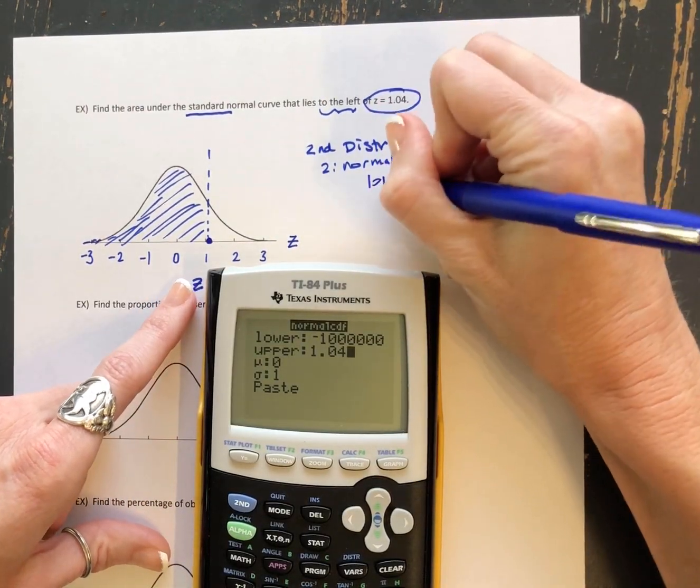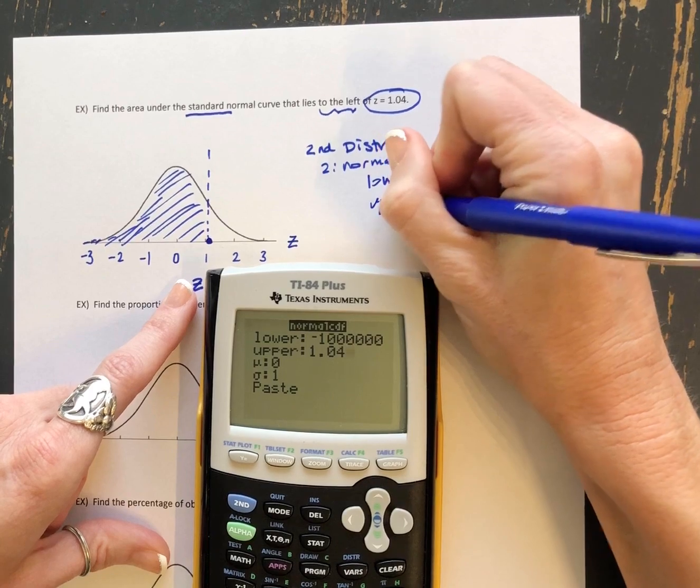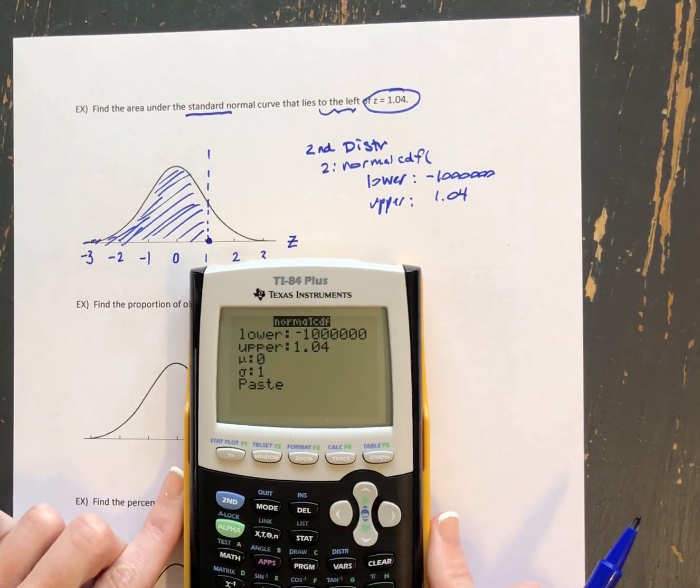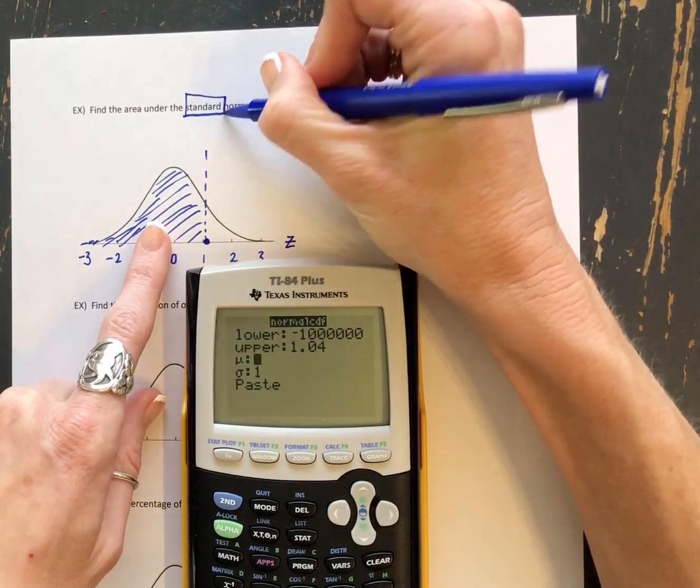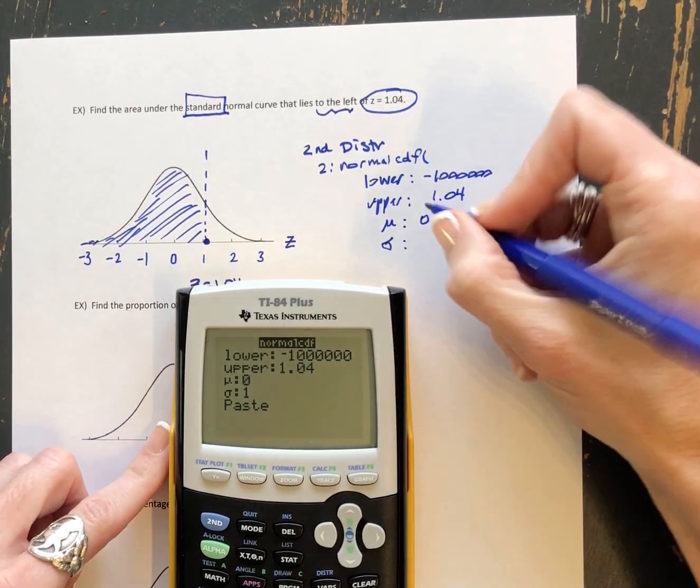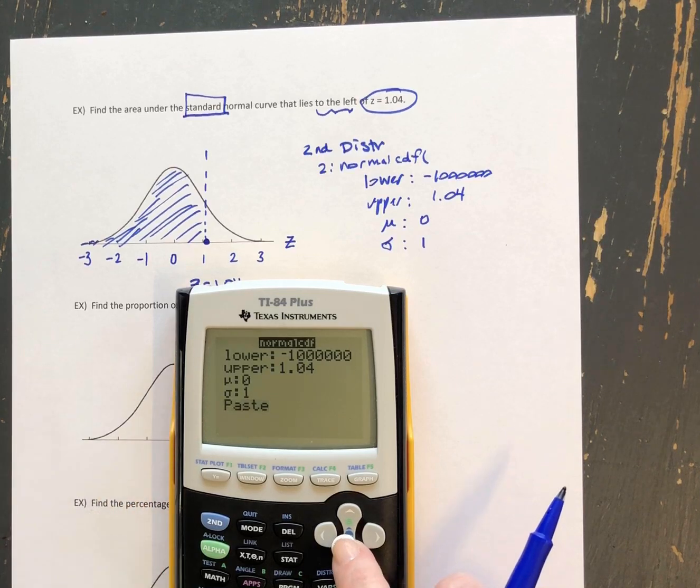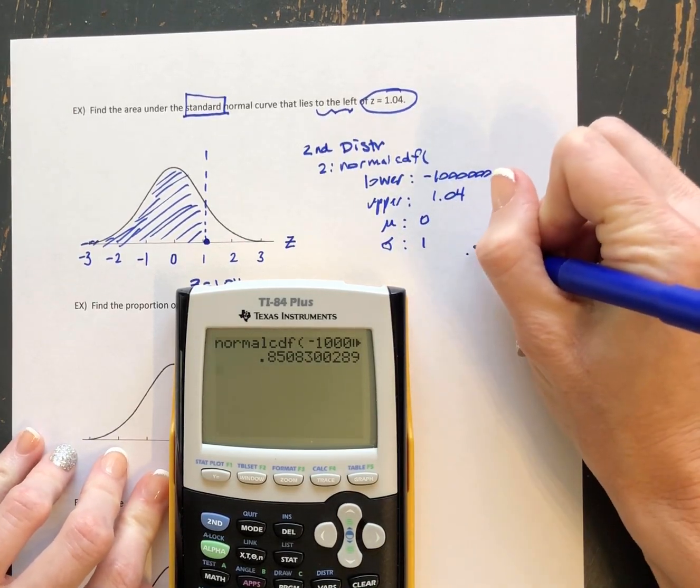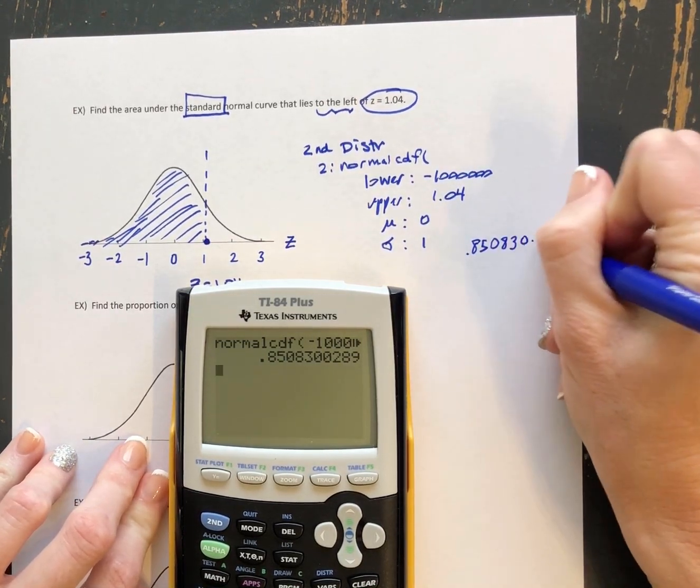So I'm going to try it right here as we go. So our lower, we did negative a million. And our upper, we did 1.04. Our mean, because this is a standard normal distribution, our mean is 0. And our standard deviation is 1. And you can just keep hitting enter until you get your answer. Which I got 0.850830, and it continues.